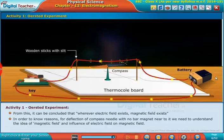In order to know reasons for deflection of compass needle with no bar magnet near to it, we need to understand the idea of magnetic field and influence of electric field on magnetic field.